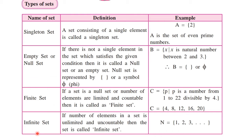The last set is infinite set. Infinite means uncountable — the elements which cannot be counted. Such sets are called infinite sets. Examples include natural numbers, whole numbers, integers, rational numbers, and real numbers — all are examples of infinite sets.